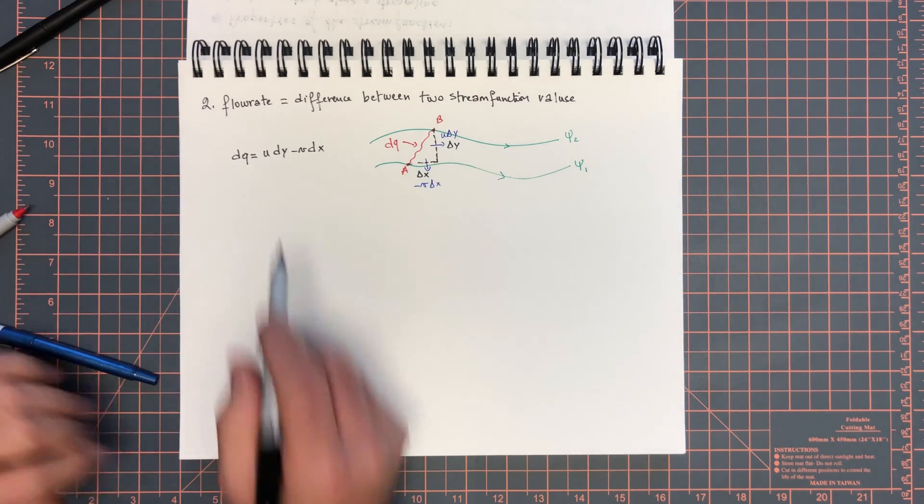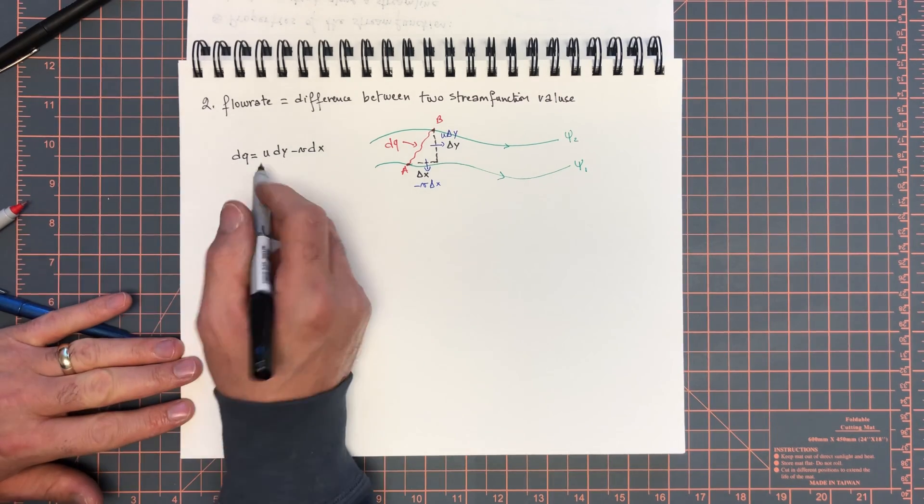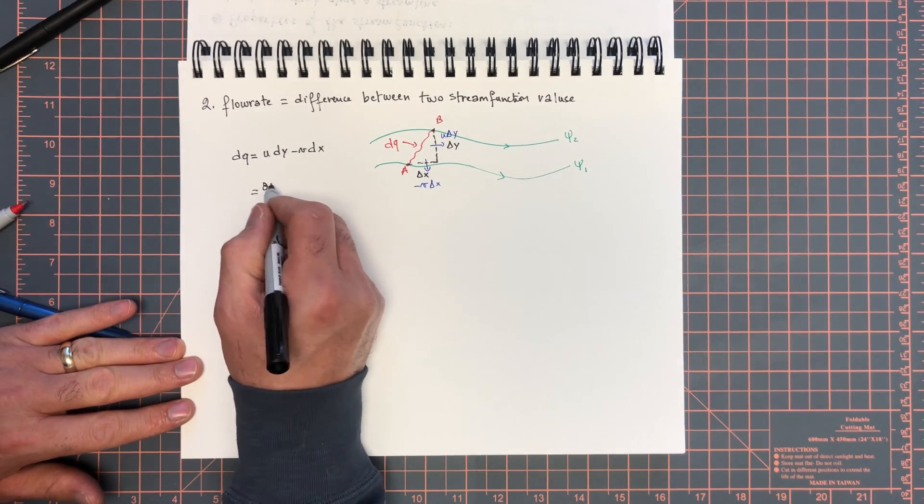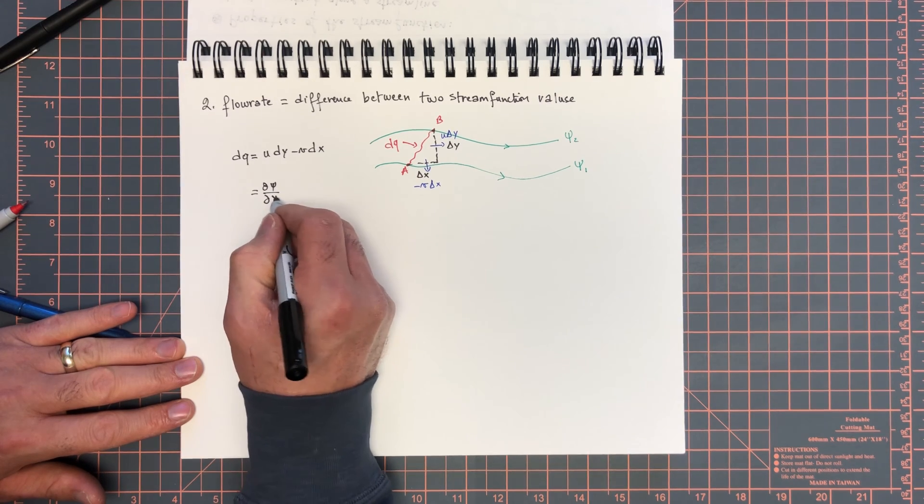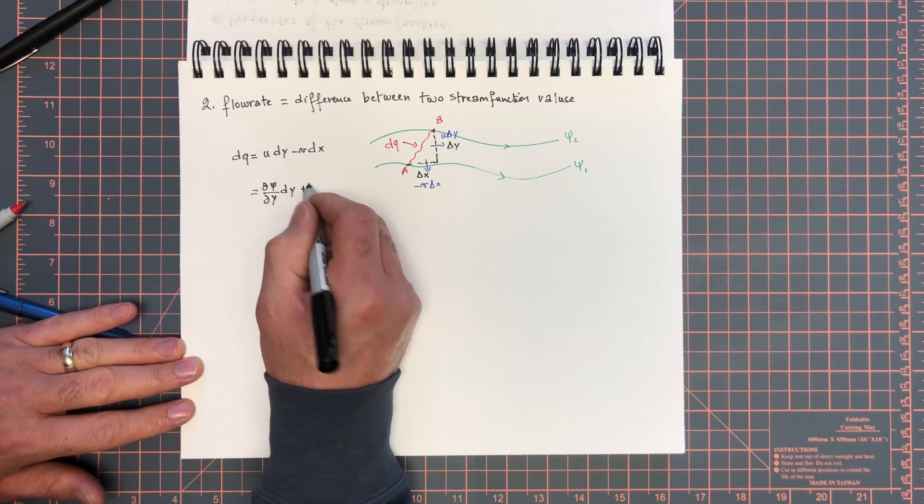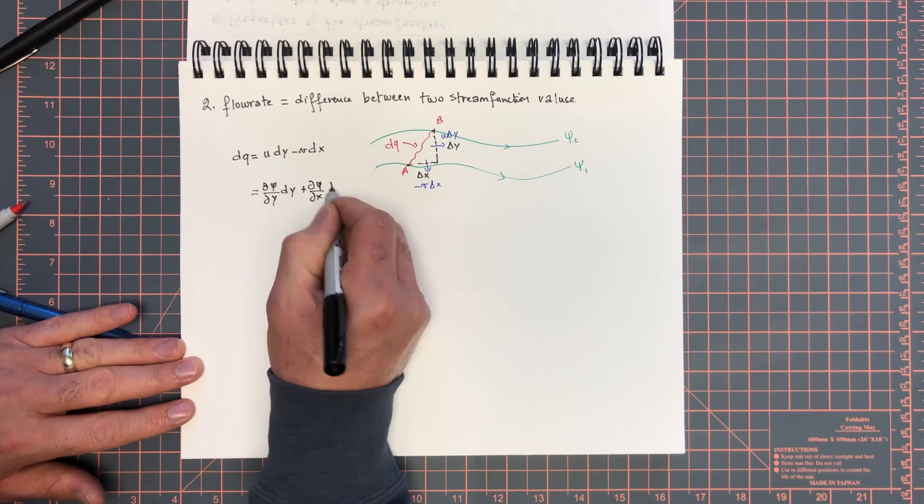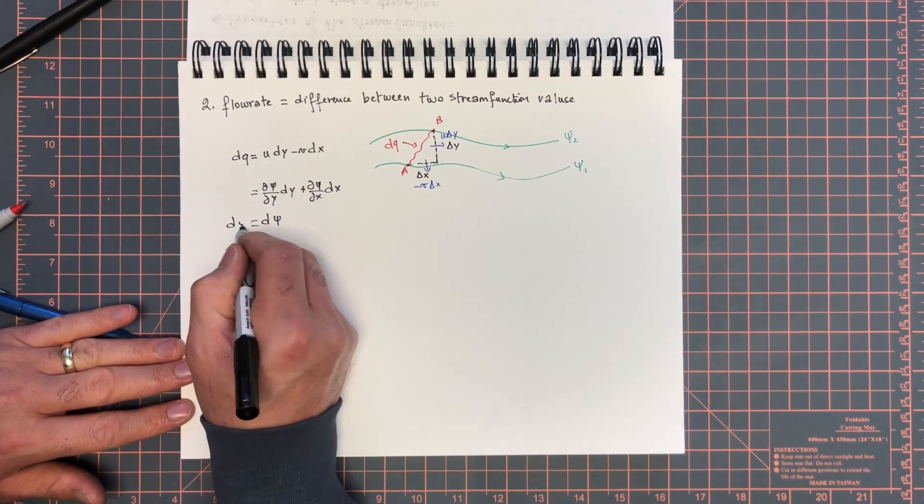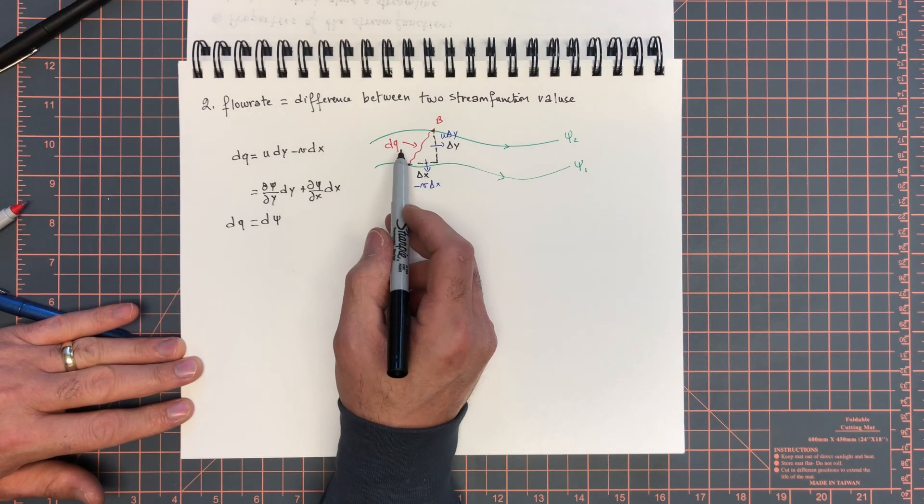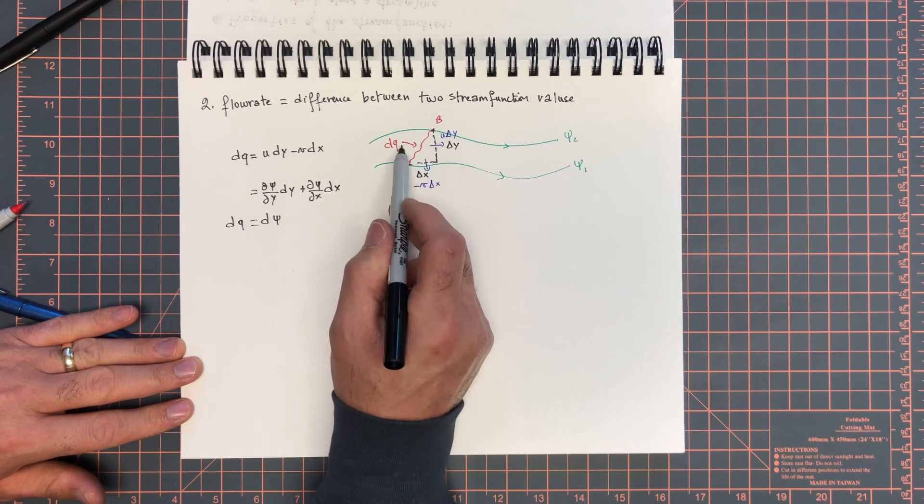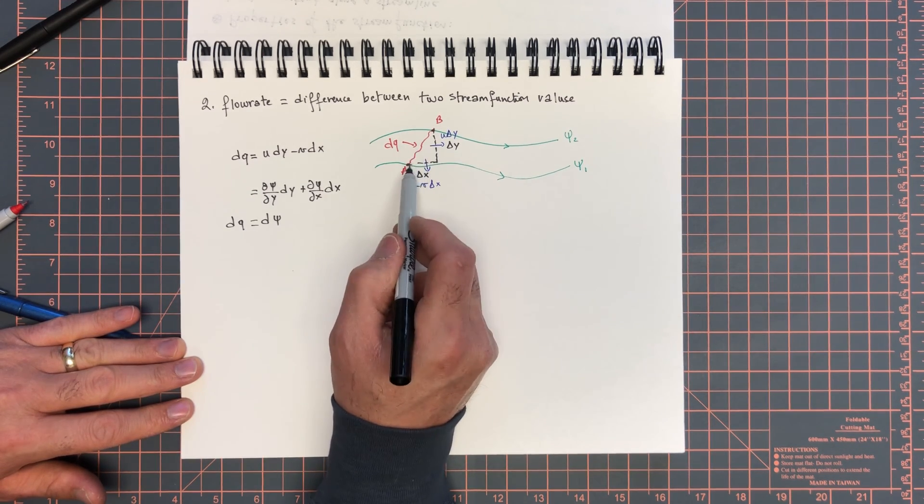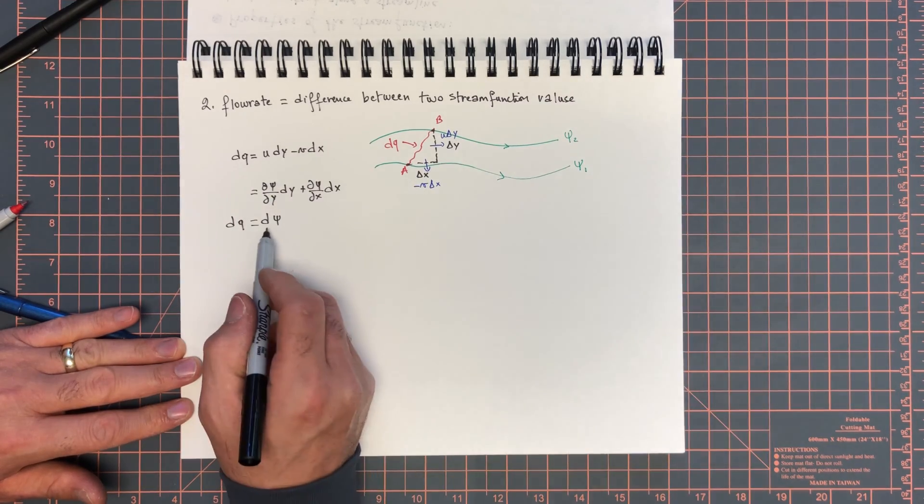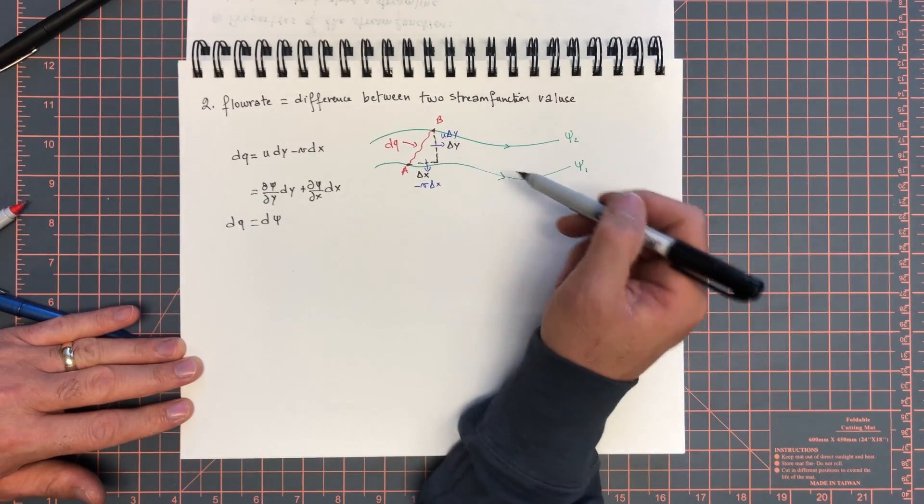But what is u dy minus v dx? That's equal to dψ/dy dy plus dψ/dx dx, and that's nothing more than dψ. So the change in q from this point to that point, or the differential flow rate between these two points, is equal to the change in ψ from this streamline to that streamline.